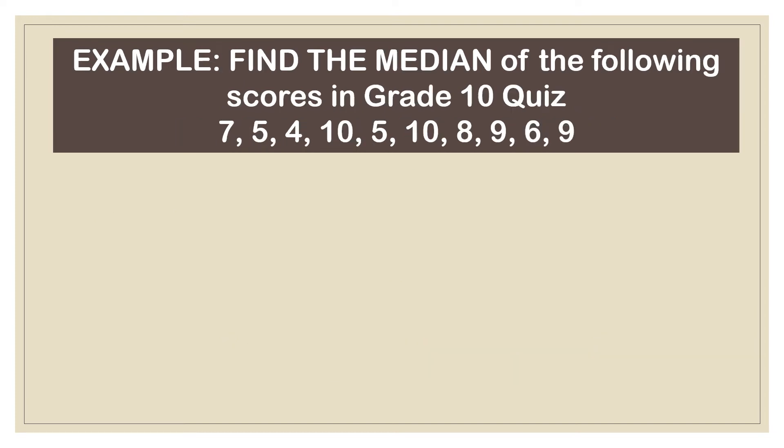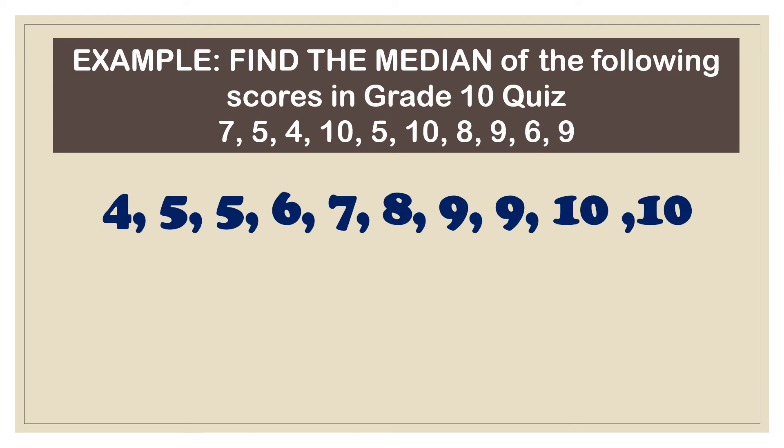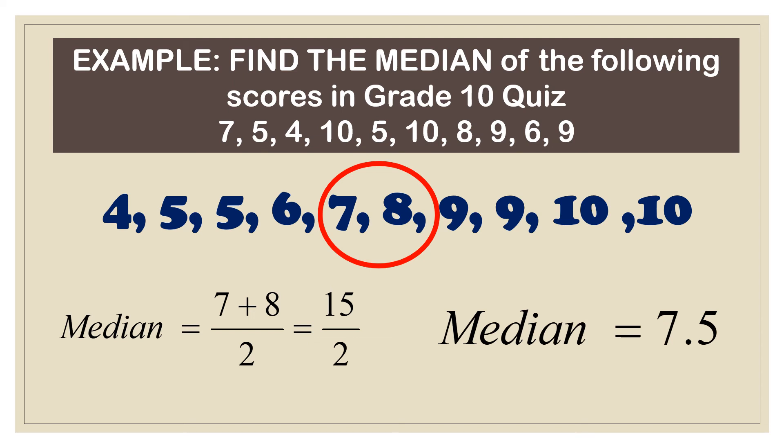Example, find the median of the following scores in the grade 10 quiz. Now in this example, or in this given problem, the scores are not yet arranged. So let's arrange them in ascending order. And then find what's in the center. So since there are 10 scores, there are two numbers in the middle. So what we do, we just add them, 7 plus 8, and then divide by 2. So 15 divided by 2 is 7.5. So the median is 7.5.